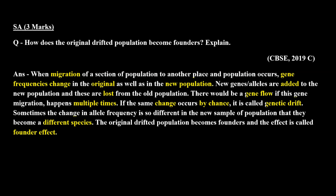Jab ye change multiple times hota hai to usko bolte hain gene flow, aur jab ye change by chance hota hai to usko bolte hain genetic drift. Jab wo population nai jagha pe ja rahi hai to jeans ka addition kar rahi hai, yani wo nai species banayegi. Usi species ko hum bolte hain founders species, aur iske effect ko hum bolte hain founders effect, kyunki jo nai species bani wo original species se alag bani.